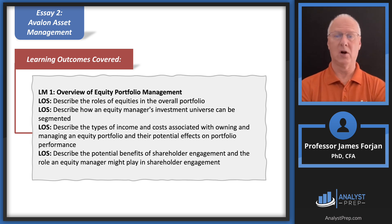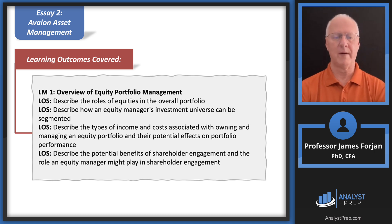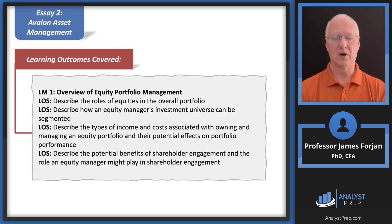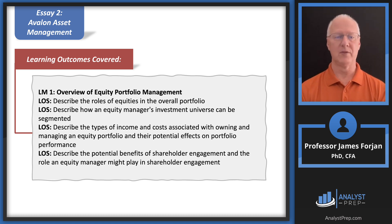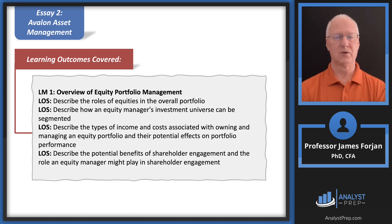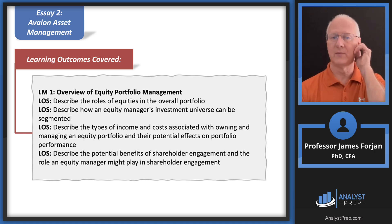Types of income and costs — our focus will be on trading costs. We've got management fees, administrative fees, marketing and distribution costs, and trading costs, not least of which is the bid-ask spread. The last part of that LOS addresses the potential effects on portfolio performance, and then the last question covers shareholder engagement.